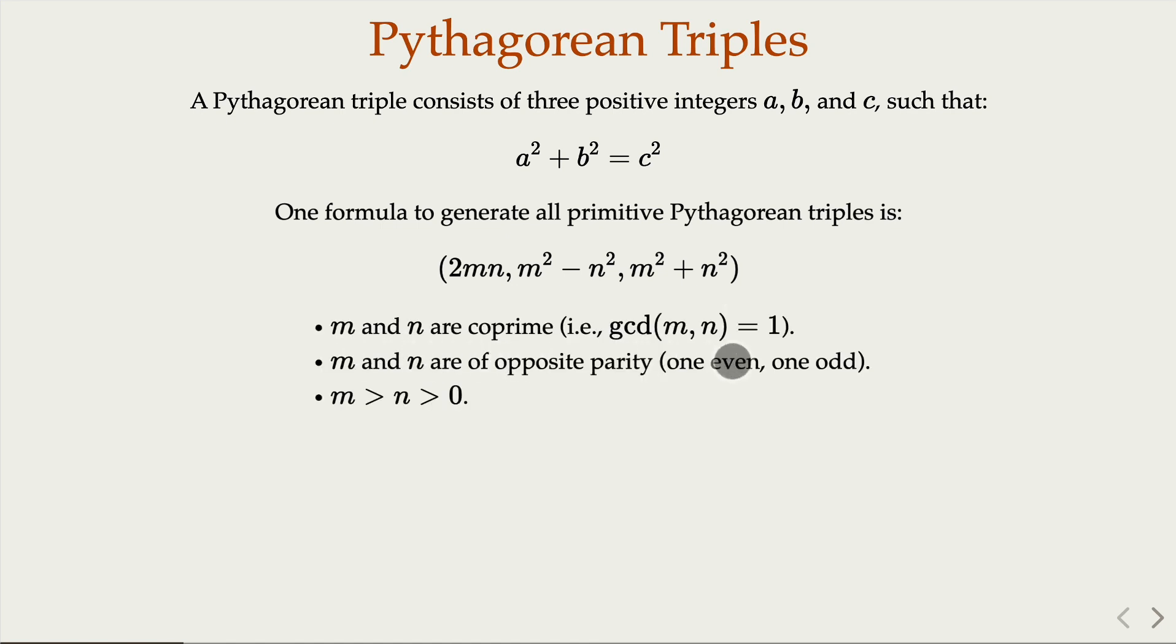Here where m and n are relatively prime, and they have opposite parity, that is, one must be even, the other one must be odd. And of course, m is greater because we have m squared minus n squared here for one of the values.